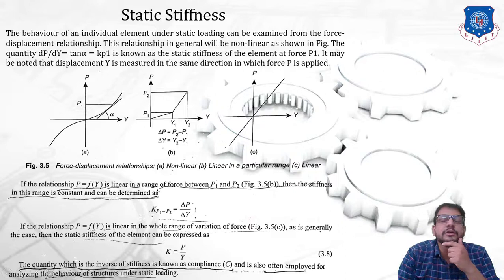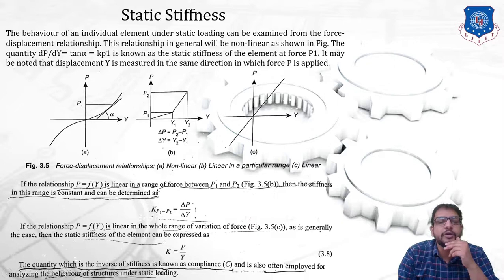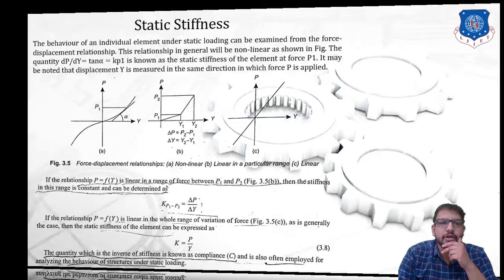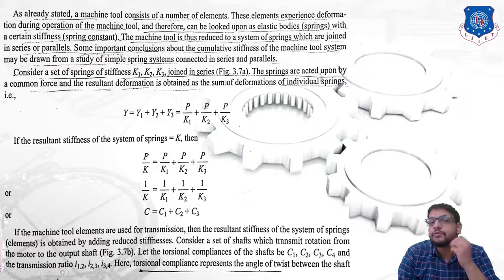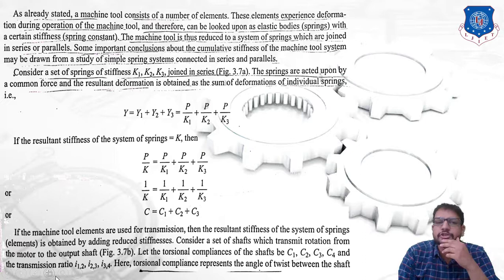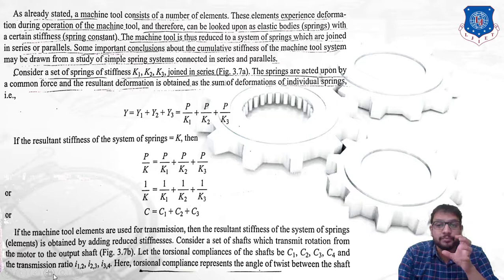The inverse of stiffness is called compliance, denoted by capital C. The reciprocal of stiffness is called compliance, and it is employed for analyzing the behavior of a structure under static loading conditions. A machine tool consists of a number of elements — tail stock, head stock, spindle, tool post — all of which experience deformation during operation and can therefore be looked upon as elastic bodies, which resemble springs.